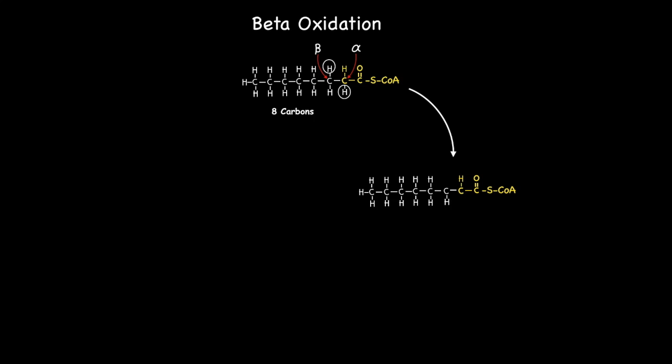Note how the removal of the hydrogen atoms from the beta and alpha carbons results in the formation of a double bond and the creation of an alkene. This first step is considered an oxidation reaction as hydrogen atoms are removed from the fatty acid.